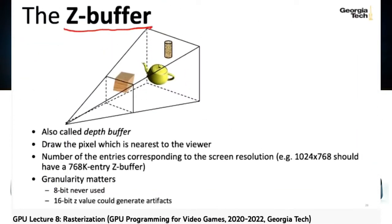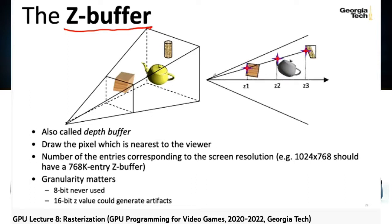In previous lectures on GPU programming for video games, we've generally assumed that when you write a pixel into the frame buffer, you're comparing the depth of the pixel you're currently trying to write to a depth value already stored in a Z-buffer, and you only write the new color value and depth value if the pixel you're trying to write is actually closer to the camera than the pixel already in the buffer.